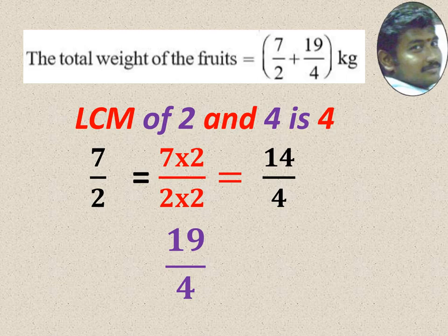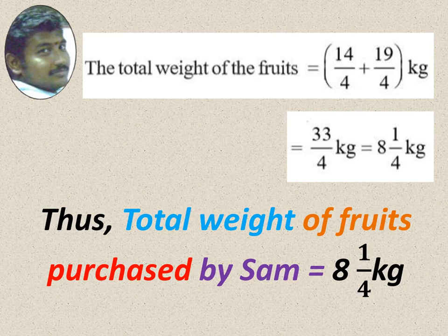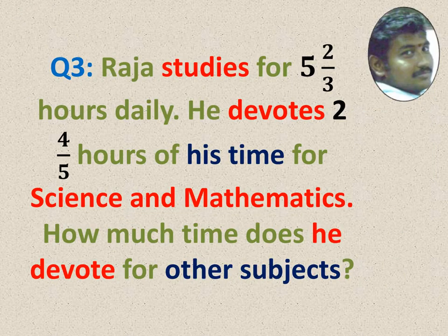When we are adding fractions, those fractions must be like fractions. Then only we can add. 14 by 4 plus 19 by 4 is equal to 33 by 4. When you convert into mixed, we get 8 1 by 4 kg. So the total weight of fruit purchased by Sam is equal to 8 1 by 4 kg. Hope you understand how to add.